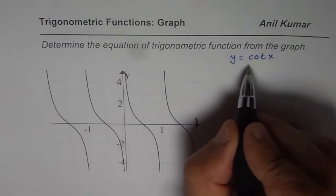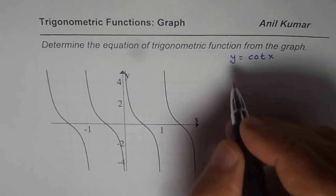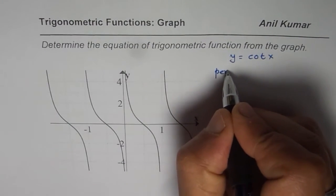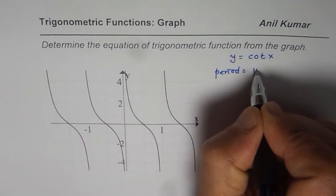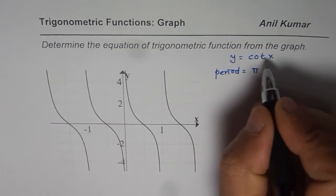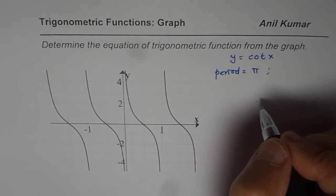First, let us understand the characteristics of cotangent x. We know the period for cotangent x is π, and the other critical values for cotangent x to consider are the asymptotes.